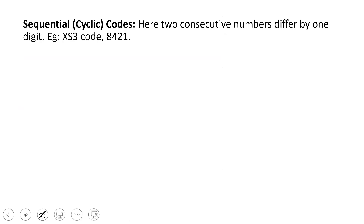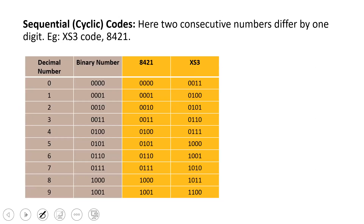Next is sequential or cyclic codes. In these codes, two consecutive numbers differ by only one digit. For example, in XS3 code, if you add 1 to 0101 you get 0110 — only one digit differs. This property of differing by exactly one bit between consecutive numbers is what defines sequential or cyclic codes. Examples include XS3 and 8421 codes.